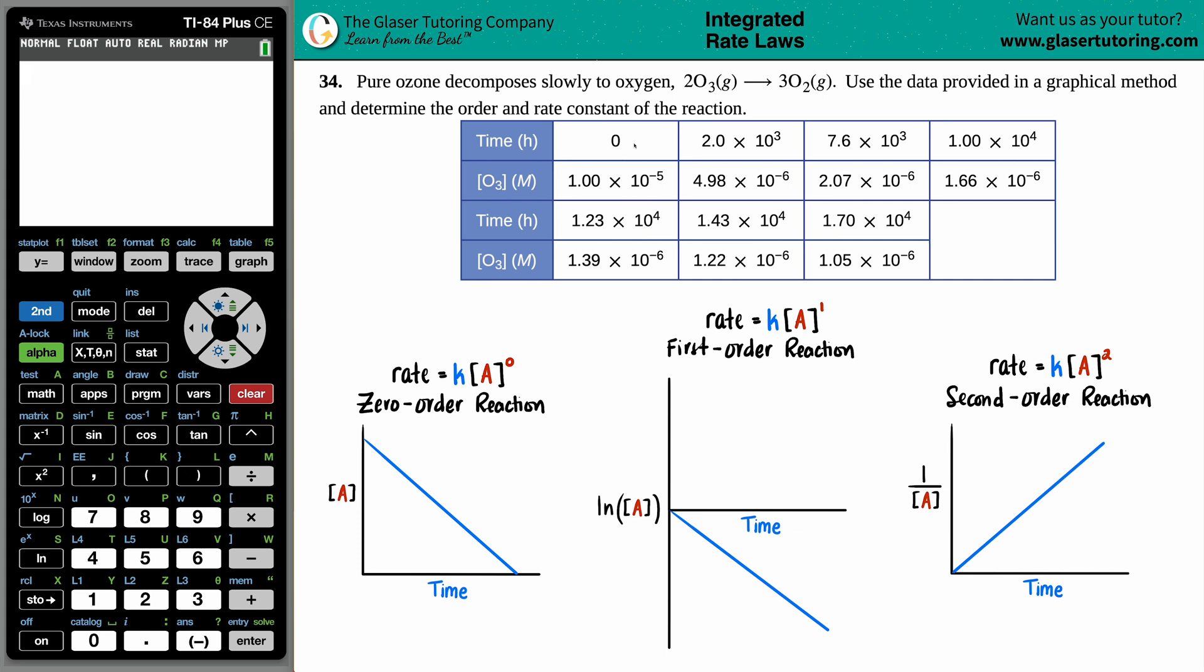Number 34, pure ozone decomposes slowly to oxygen, which is 2 O3 gas yields 3 O2 gas. Use the data provided in a graphical method and determine the order and the rate constant of the reaction. They give us this data table. I notice that we have a unit of time and a concentration of the starting material. The reactant is O3, and we have to use this data to determine the order and the rate constant for this specific reaction.